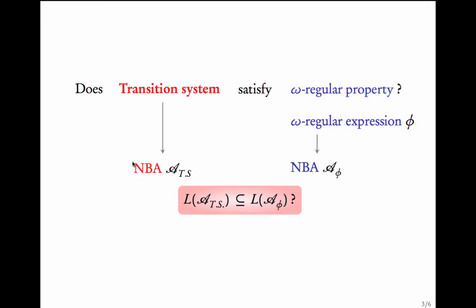What we want to check is whether the language of the transition system's Büchi automaton is contained in the language of the property automaton — that is, whether every trace of the transition system, every word in this language, satisfies property phi. The traces of the transition system get converted to words accepted by this Büchi automaton, and these are the set of infinite words which satisfy the property. So we have transformed this question into one involving two Büchi automata and the inclusion between them.